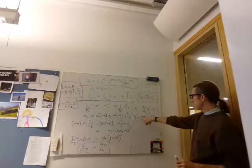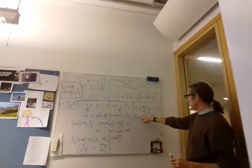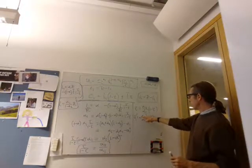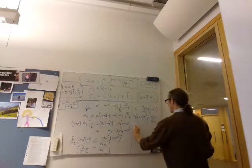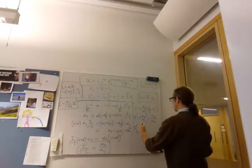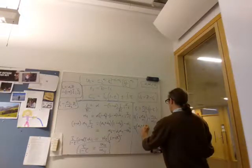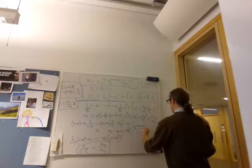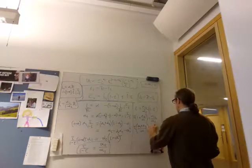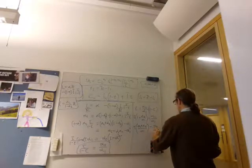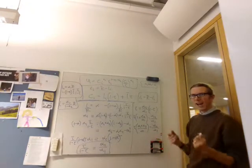To collect terms in tau, tau times 1 plus alpha 2 over alpha 1 equals alpha 2 over alpha 1. But what's this? This is alpha 1 over alpha 1 plus alpha 2 over alpha 1.